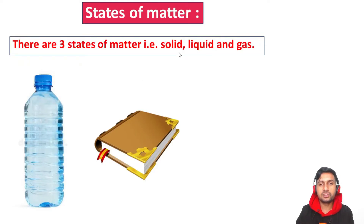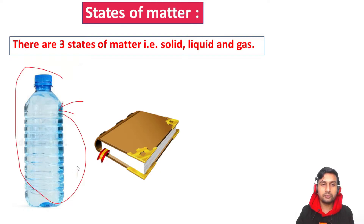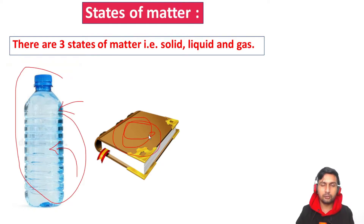The state of matter exists in three states: solid, liquid, and gas. Examples include a solid light, a bottle containing liquid water, and various books and objects.